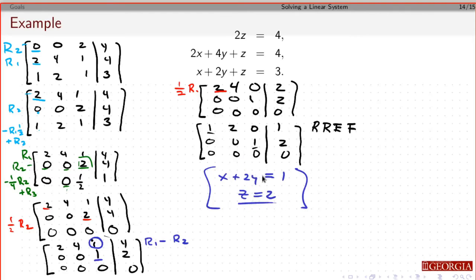I can pick any x and y I want as long as they satisfy this. So there's going to be infinitely many solutions. But I'm going to solve for my pivot. So I get x equals 1 minus 2y. Z equals 2.